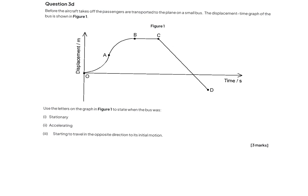Question 3d shows a displacement-time graph. We need to identify when the object is stationary, accelerating, or going in the opposite direction. It is stationary between B and C, because its displacement from the start point has not changed. It is accelerating from 0 to A — drawing tangents shows a low gradient early and a high gradient later, meaning it is speeding up. From A to B it is decelerating. From C to D the displacement is decreasing, so it is moving in the opposite direction back toward the start.